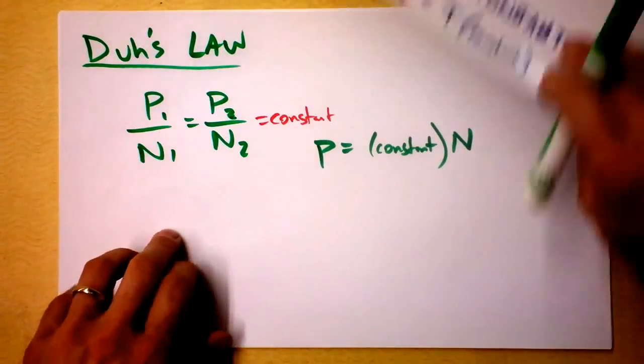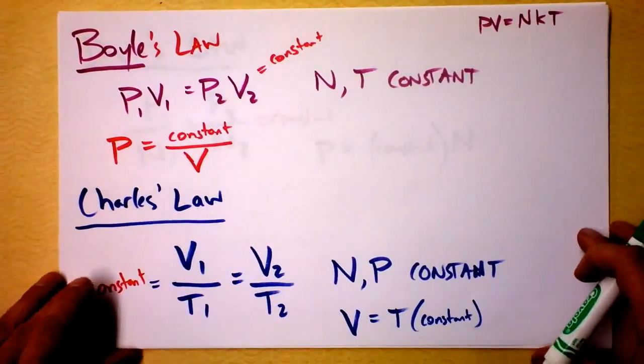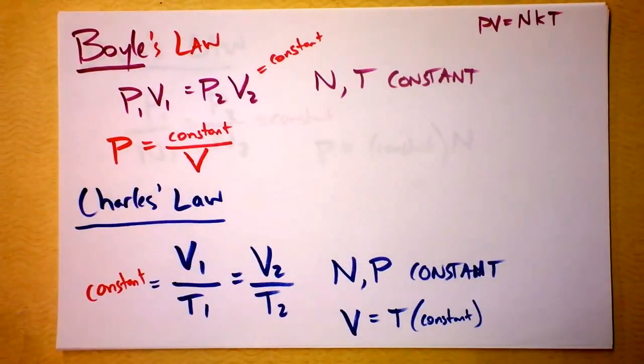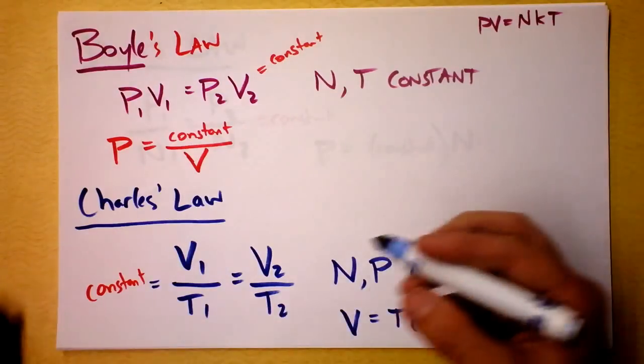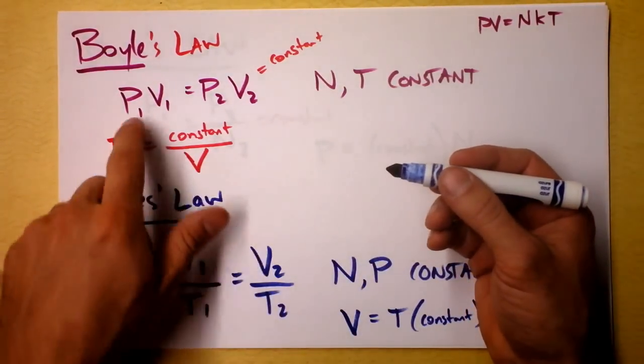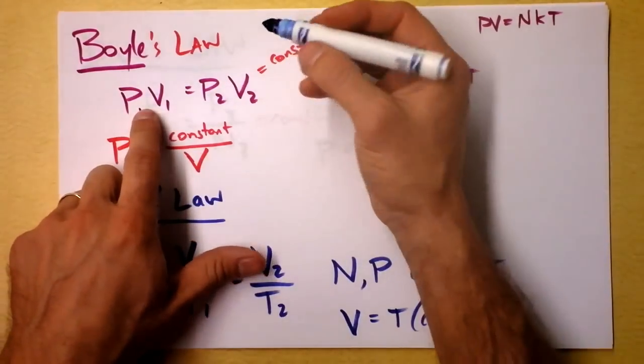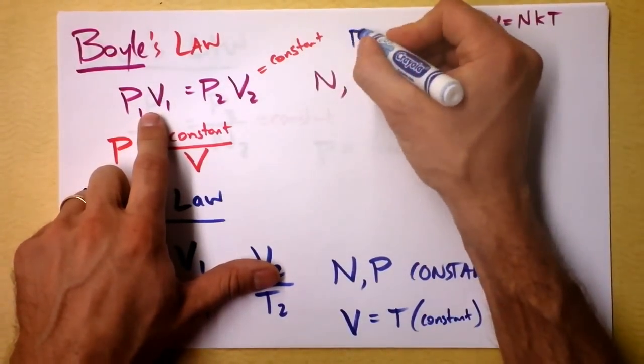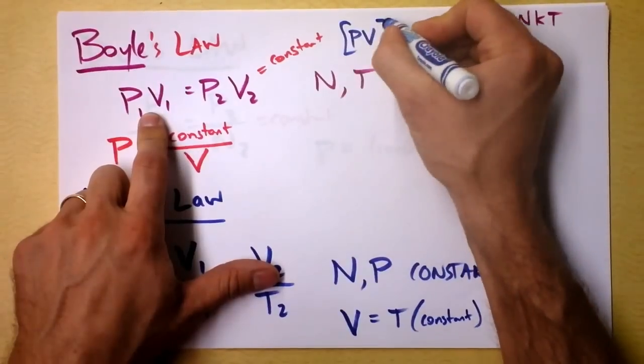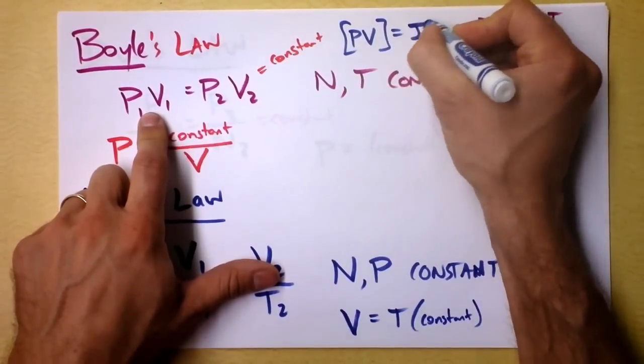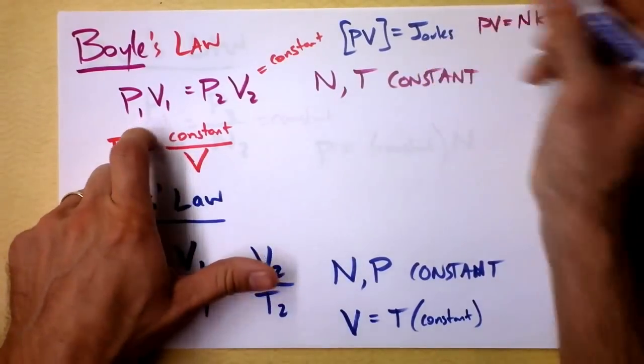But let's go back to Boyle's law. Boyle's law says pressure and volume are inversely proportional to one another. And we also know that pressure and volume multiplied together has units of energy. Let's see if I can write that down here. Pressure volume has units of joules. Interesting.